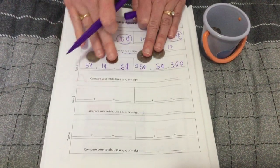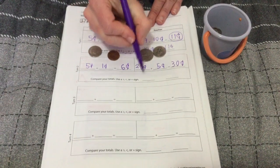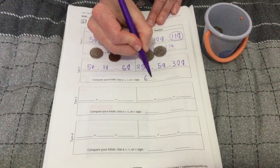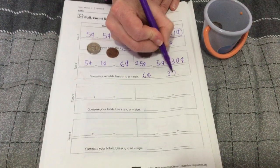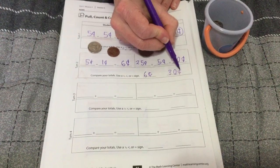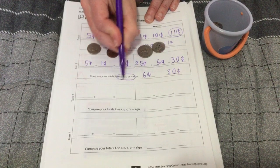I'm going to compare my totals down below. Six cents and thirty cents. Go ahead right now and write in the correct symbol.